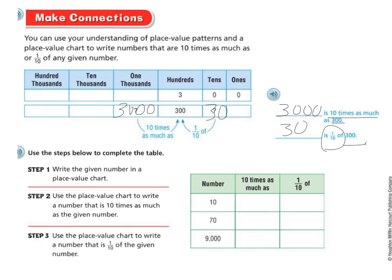Let's use the steps below to complete the table. We're going to write the given number in the place value chart — so that would be 10, 70, and 9,000. Then we use the place value chart to write the number that is 10 times as much as the given number. If my number is 10, then 10 times as much is 100. And 1 tenth of 10 is going to be 1.